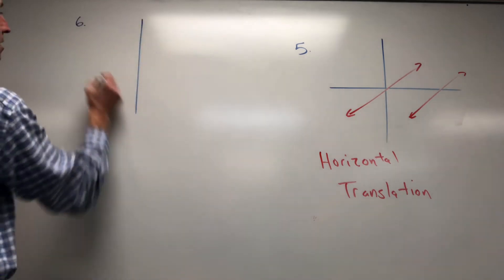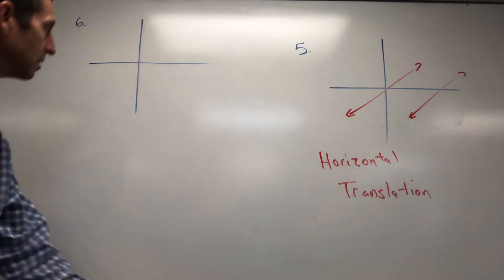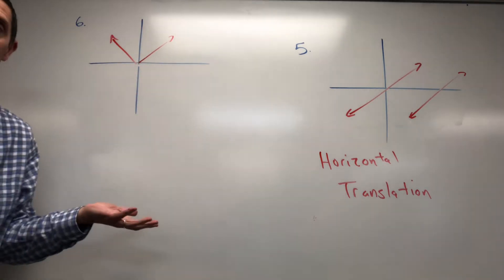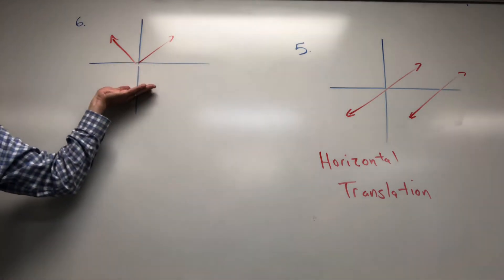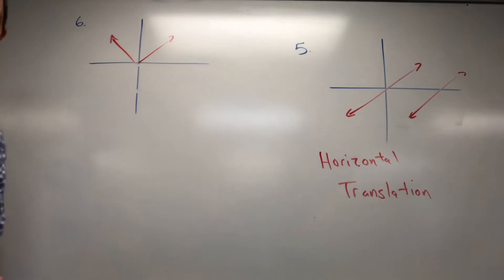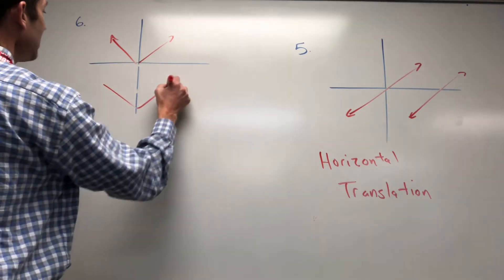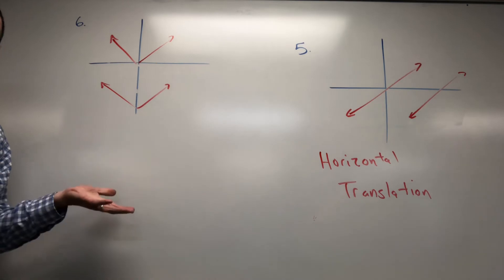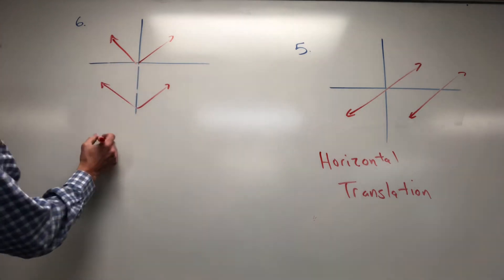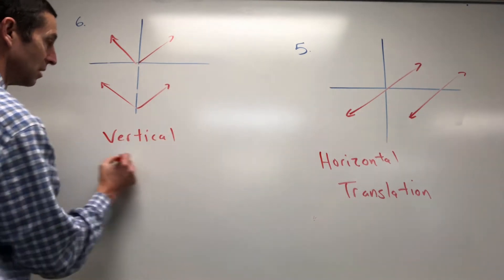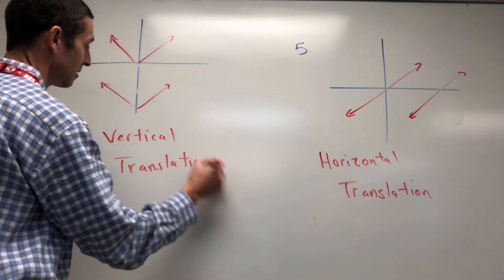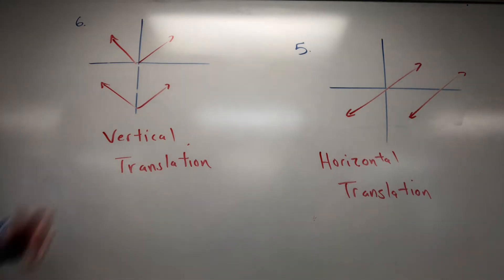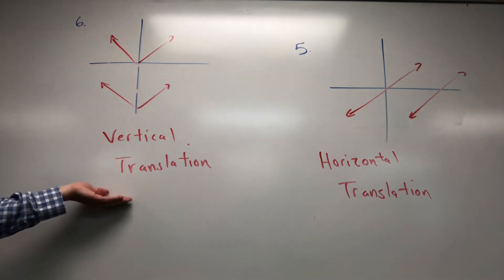Now let's do an up-down example with an absolute value graph. Here's the parent function — you recognize it as absolute value. If I give you a second function shifted down from the parent, it went down. Moving up or down makes it a vertical translation. So: parent function is absolute value, and the movement is a vertical translation.